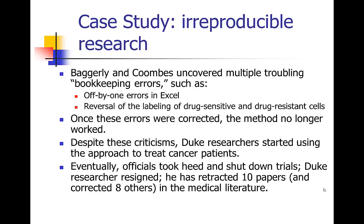What Baggerly and Coombs uncovered when they did some sleuthing in the data and the analysis is they found all sorts of bookkeeping errors. These were publicly available data, so they were able to take the same data the Duke researchers used and try to recreate their analyses. They found some really simple but very problematic problems in the data — off-by-one errors had been introduced.